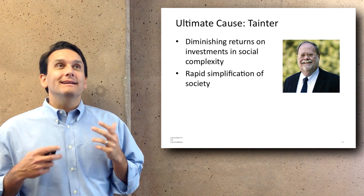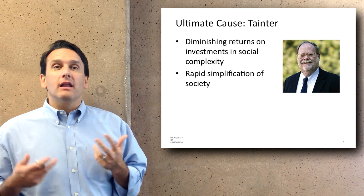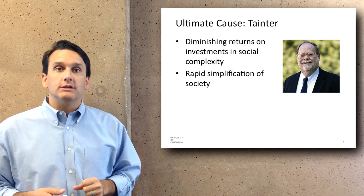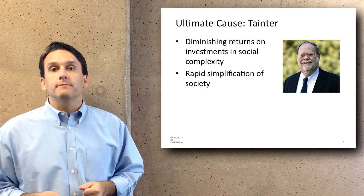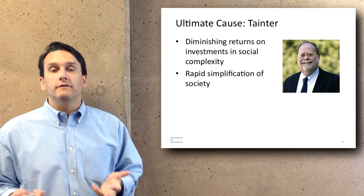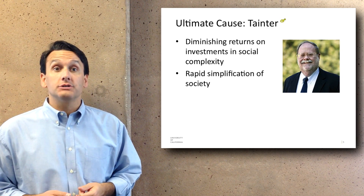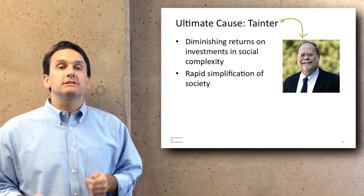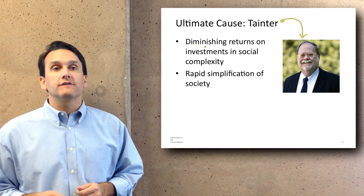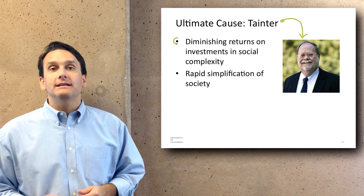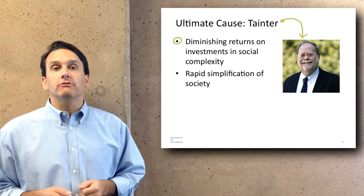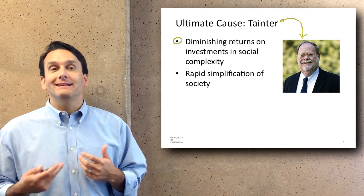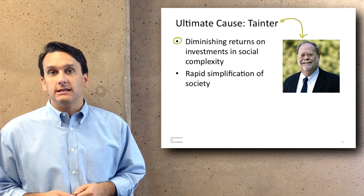There's been a lot of research on what the ultimate cause was. Joseph Tainter is one of the predominant scholars in this area, and he suggests that the ultimate cause of collapse is that there are diminishing returns on investment in social complexity.